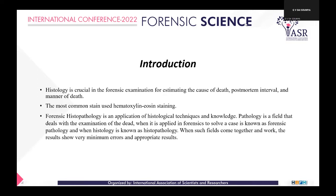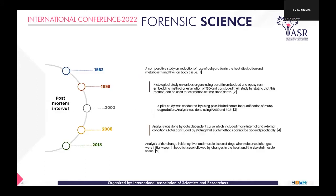Forensic histopathology is an application of histological techniques and knowledge. Pathology is a field that deals with the examination of death when applied to forensics to solve cases. A small timeline has been prepared: in 1962 a research paper was published involving a comparative study of reduction of rate and dehydration in heat dissipation and metabolism of body tissue, and by 1999 there was further advancement in research.